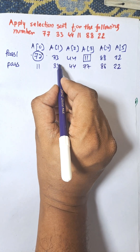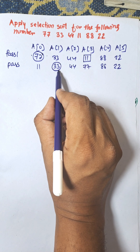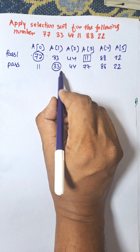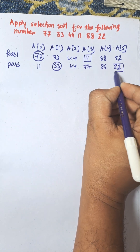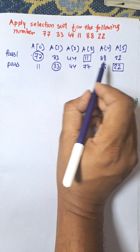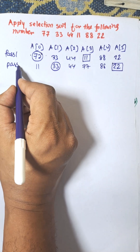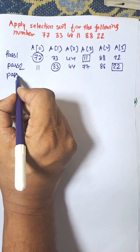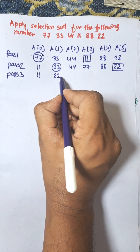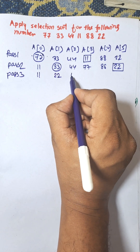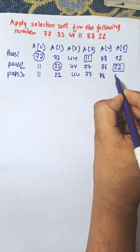The next position is 33, and the next smallest number among all remaining numbers is 22. Now, 33 is greater than 22, so they are swapped. After pass two, the array is: 11, 22, 44, 77, 88, 33.